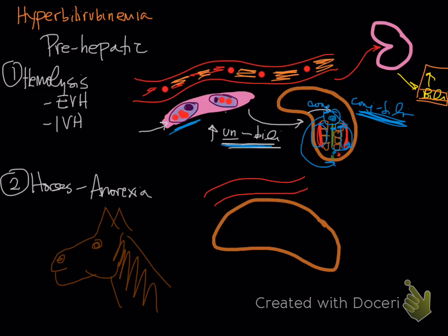So in horses with anorexia, you offer horse food. He's unwilling to eat the food for whatever reason. Maybe he has a tooth root abscess. Maybe he is sick. Who knows? But he's not eating. And so we see then an increase in unconjugated bilirubin.